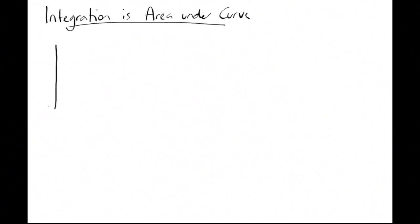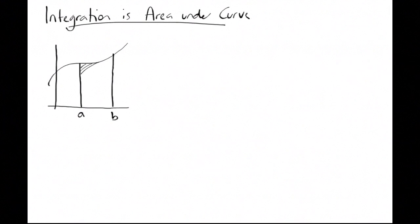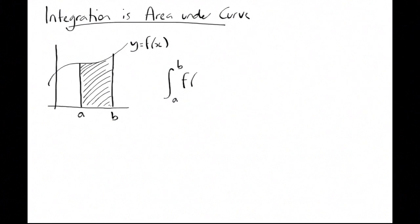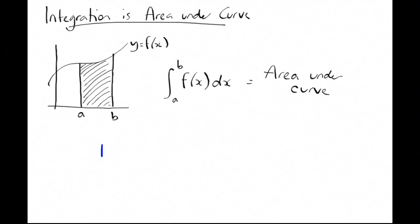Integration is area under a curve. If I've got a curve between a and b and I integrate the equation of the line f(x) between a and b, that gives me the area bounded between the x-axis, the curve, and the lines x equals a and x equals b.